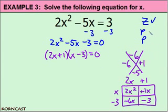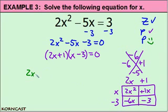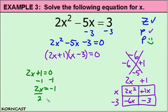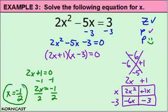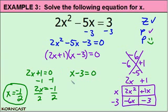We've now successfully completed both requirements and can use the zero product property. Setting the first factor equal to zero: 2x plus 1 equals zero. Subtracting one gives 2x equals negative one, then dividing both sides by two gives x equals negative one-half — that's one solution. Setting the second factor equal to zero: x minus 3 equals zero. Adding three to both sides gives x equals three, which is the other solution for this quadratic equation.